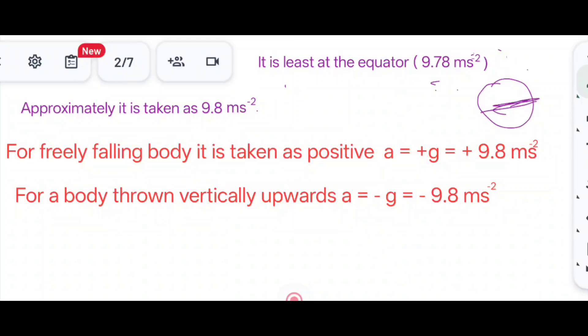Taking approximate value, we will have 9.8 meters per second squared. That is, G is equal to 9.8 meters per second squared. Always we are going to take this value, but in some numericals we will round off the value and take it as 10 meters per second squared.